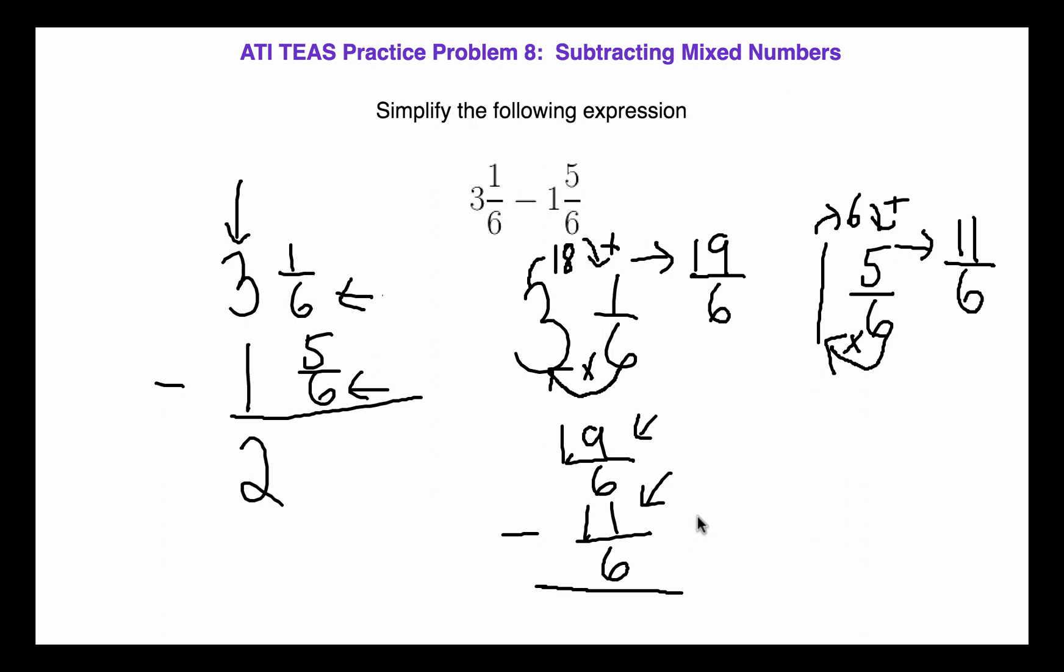So now we're ready to subtract. 19 minus 11 is eight, and then we have a common denominator of six. So our final answer is 8 over 6.